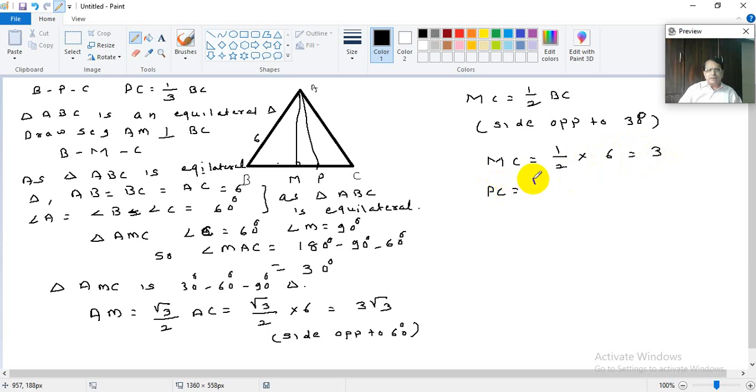Now what is given to you? PC is 1 by 3 BC. But BC is 6. So this is 1 by 3 into 6. That means it is 2. PC is 2 centimeters.